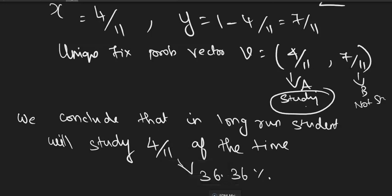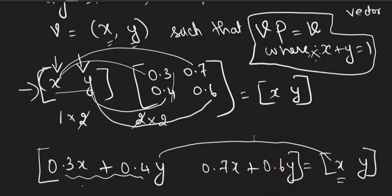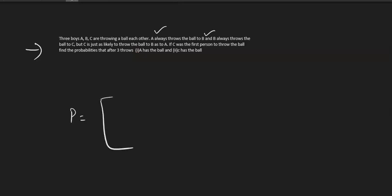There are only three types of problems in Markov chains. One is finding the regular stochastic matrix, done in a previous video. Another involves finding the unique fixed probability vector. In this problem, we framed the transition probability matrix ourselves. Now here is one more example. Three boys A, B, C are throwing a ball to each other — we will write the transition probability matrix now.